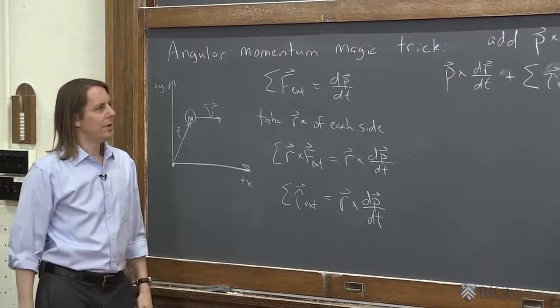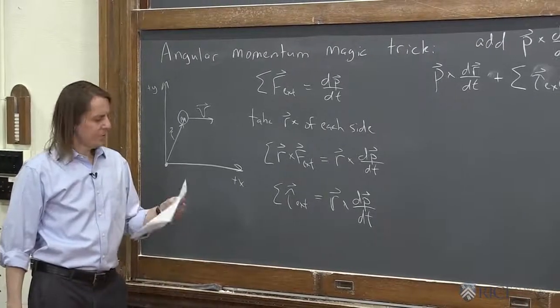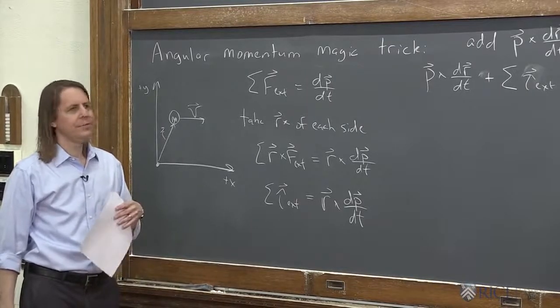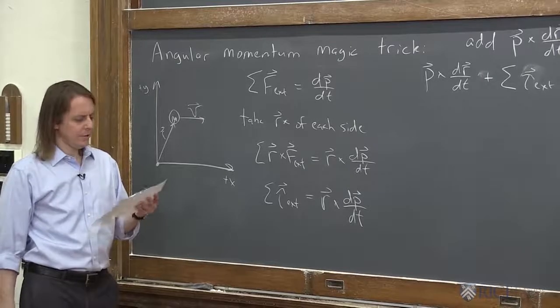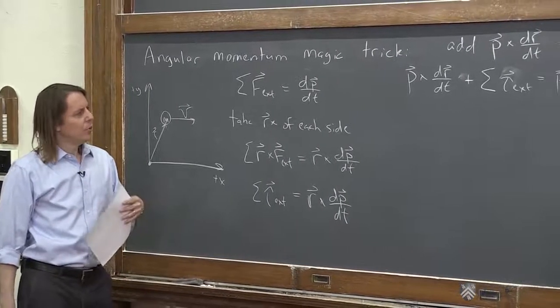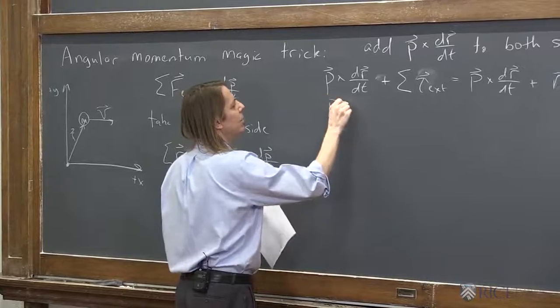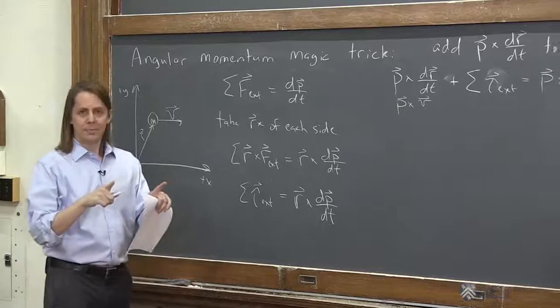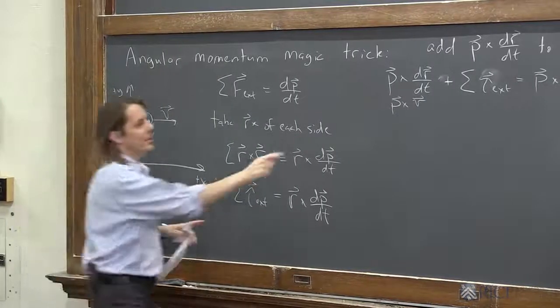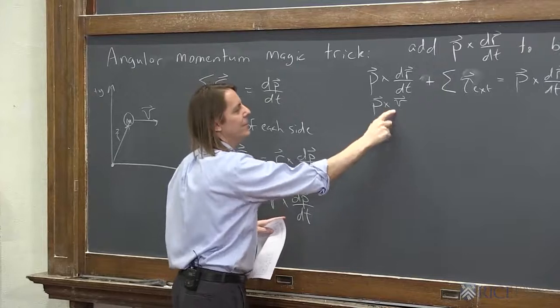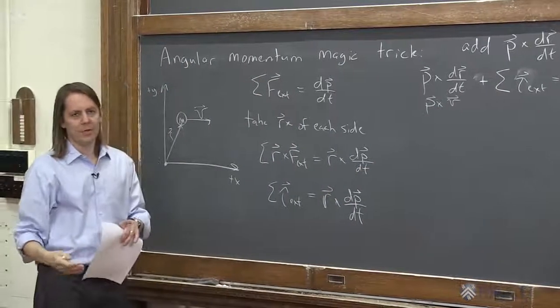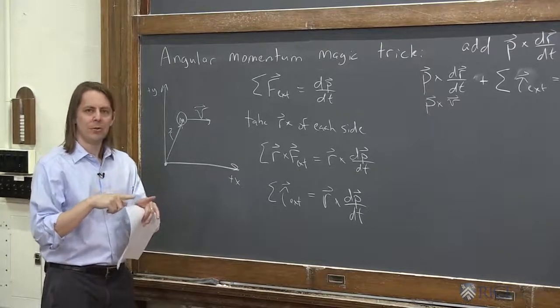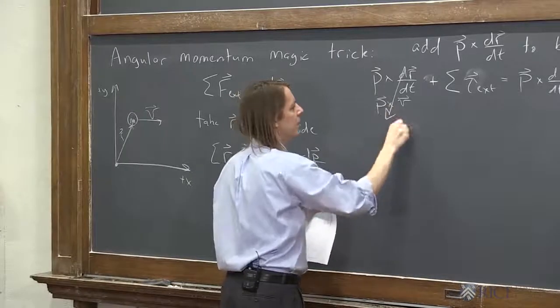Not bad. Now what we've got to realize, when we look at that and say, what is dr dt? What is dr dt? It's v. dr dt is v. So we realize this is really p cross v. Well, what do we know about p and v? They're in the same direction. One is just the mass times velocity, m times v, cross with v. v cross v is a vector cross with itself. A vector cross with itself is zero. Same direction, no cross product. Sine of the angle between them is zero. So this side, we're going to drop it. That's a zero.